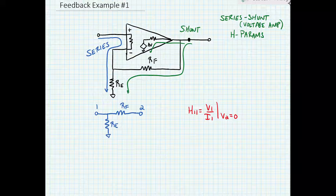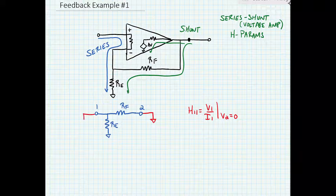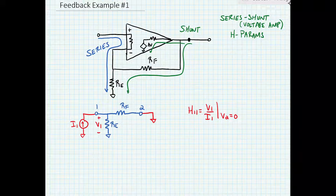Here we have our feedback network — a two-port network with ports one and two labeled. H11 is equal to V1 over I1 when V2 is short-circuited. So I'm going to short-circuit V2 to ground, put a test current source I1 in, and measure V1 that develops across port 1. We can easily see that V1 over I1 is equal to RE in parallel with RF.